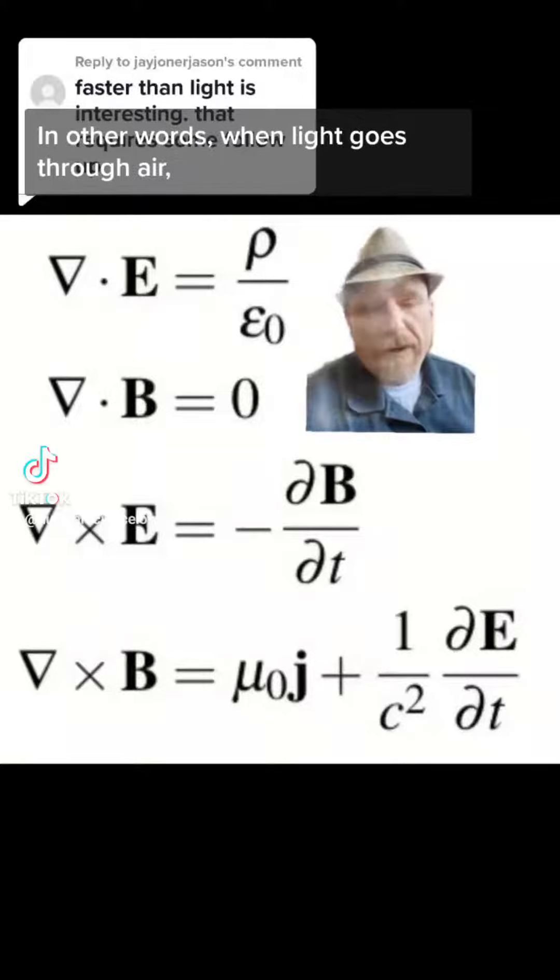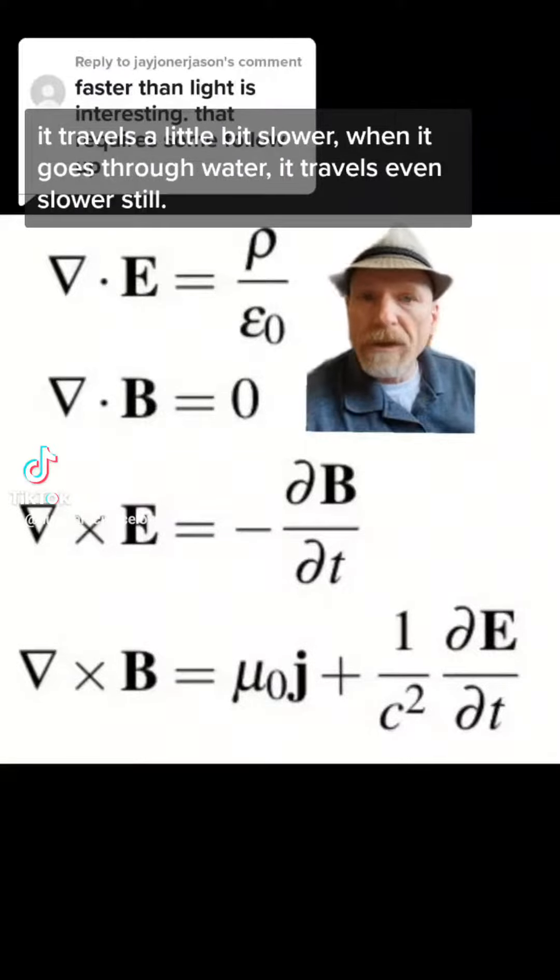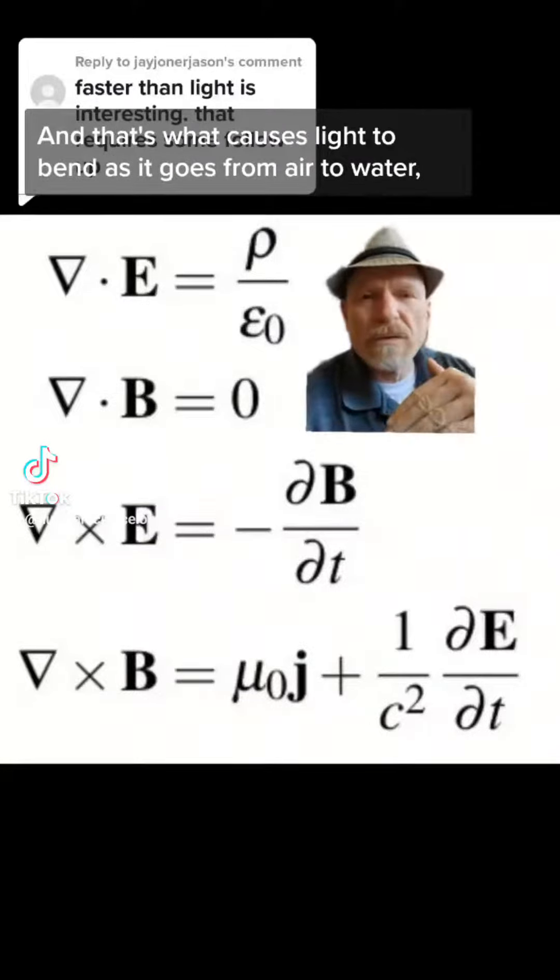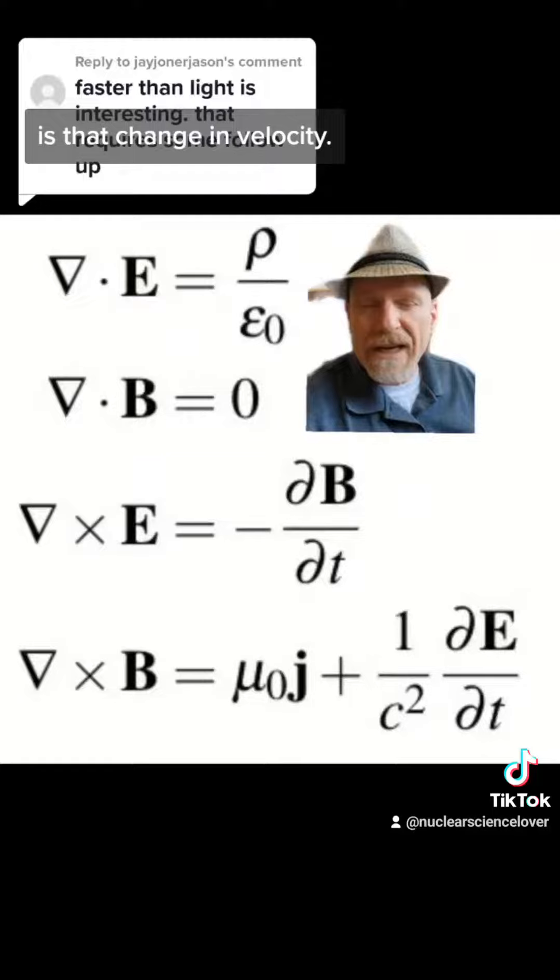In other words, when light goes through air, it travels a little bit slower. When it goes through water, it travels even slower still. That's what causes light to bend as it goes from air to water, is that change in velocity.